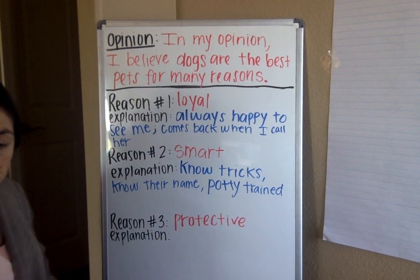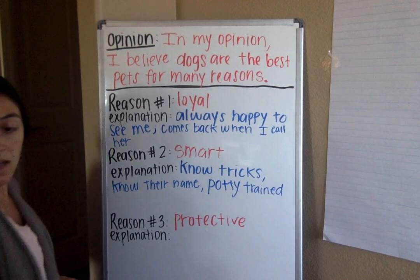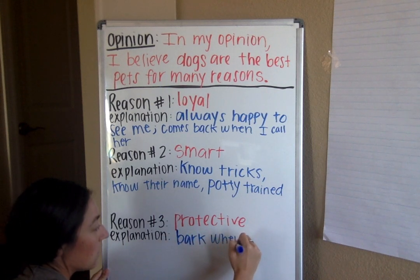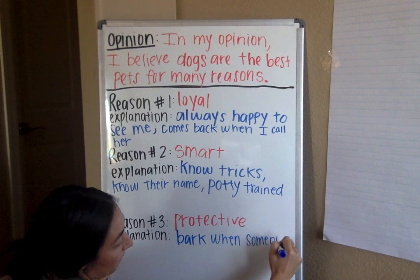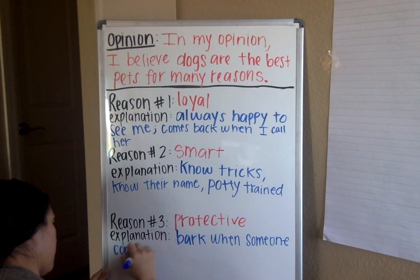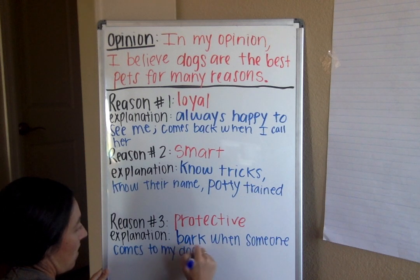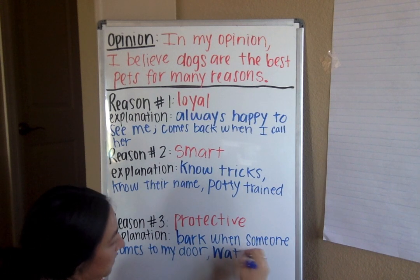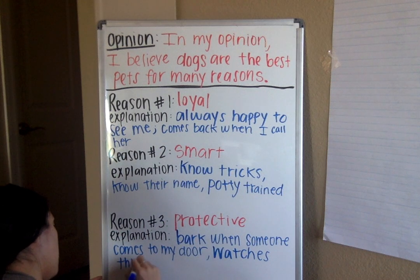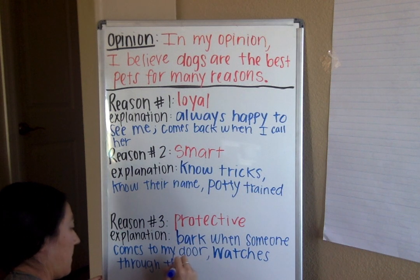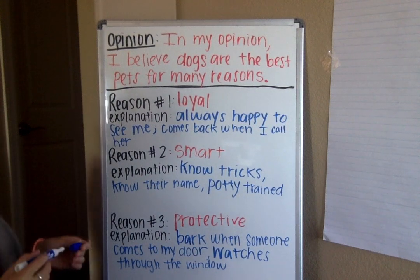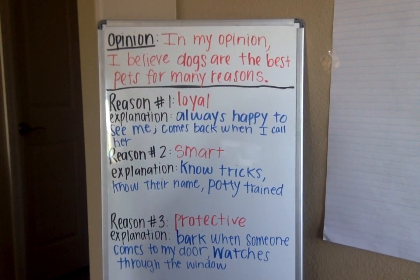And then for 'Protective,' I try to come up with some examples: they bark when somebody comes to my door, and she's always watching through the window. I could keep going if I wanted to, but I'll leave it there so that you get a good idea of what I'm trying to do.